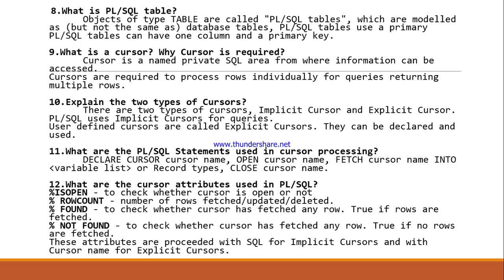What is a PL/SQL table? Objects of type TABLE are called PL/SQL tables, which are modeled as database tables. PL/SQL tables use a primary key and can have one column and a primary key.